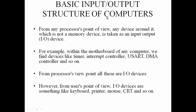This is the basic input and output structure of a computer. From the processor's point of view, if you have a motherboard, you find devices like timer, interrupt controller, UART, and DMA controller — these are called I/O devices. From the user's point of view, I/O devices are things like keyboard, printer, mouse, CRT, etc.